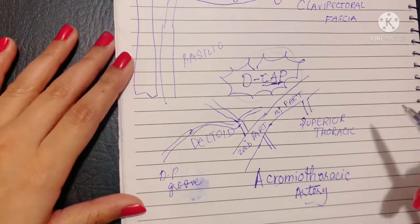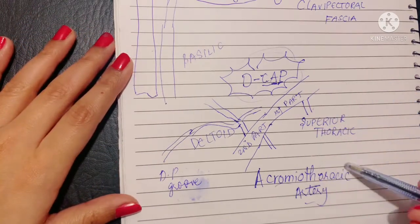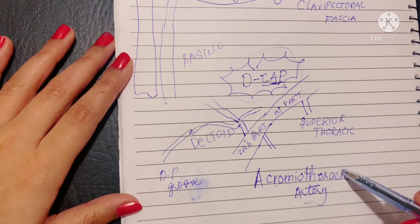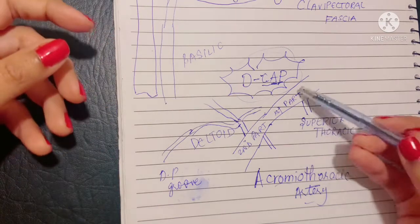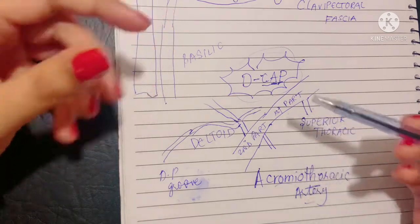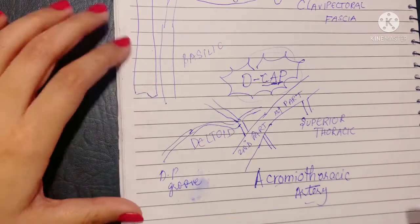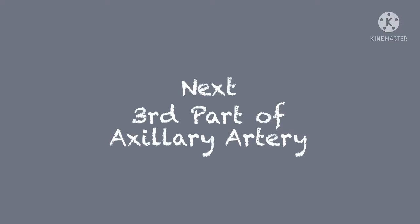So this is essential viva question that they may ask you to describe the pathway and the supply of any part of the axillary artery, any branch of the axillary artery. Moving on, let's talk about the third part of the axillary artery.